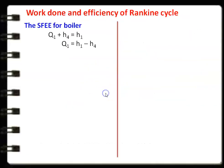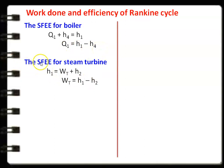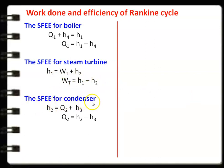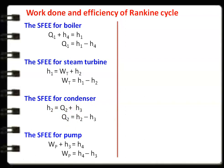Applying the steady flow energy equation: for the boiler, Q1 + H4 = H1, so heat added Q1 = H1 - H4. For the turbine, H1 = Wt + H2, so turbine work Wt = H1 - H2. For the condenser, H2 = Q2 + H3, so heat rejected Q2 = H2 - H3. For the pump, Wp + H3 = H4, so pump work input Wp = H4 - H3.